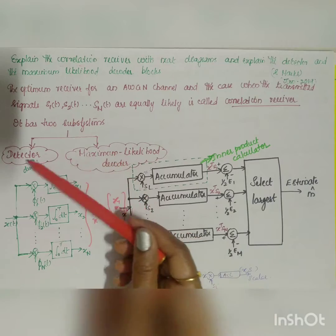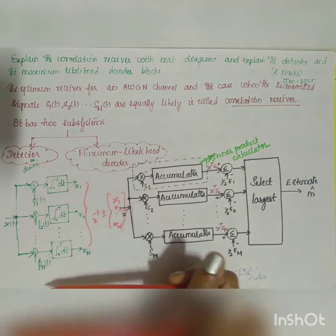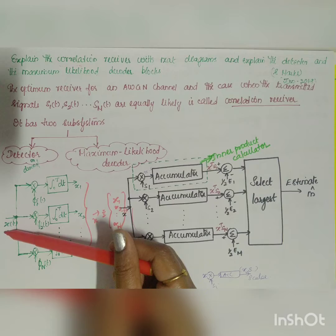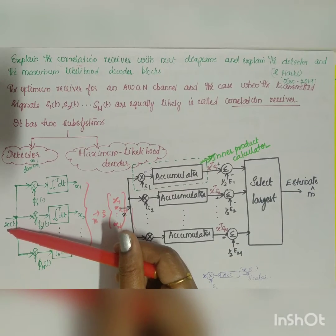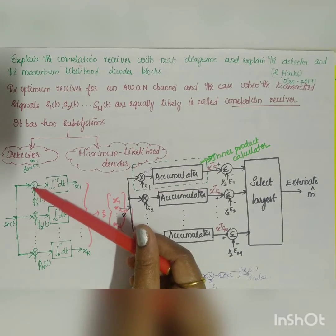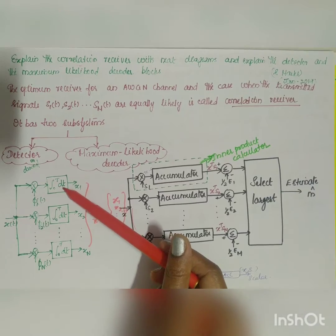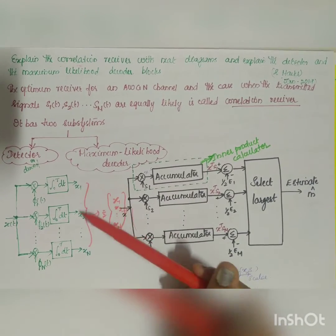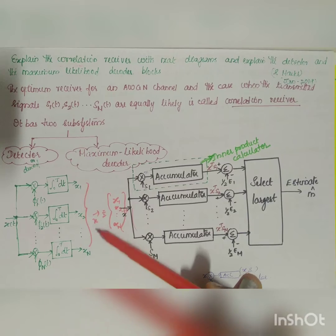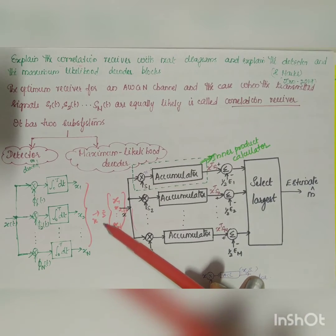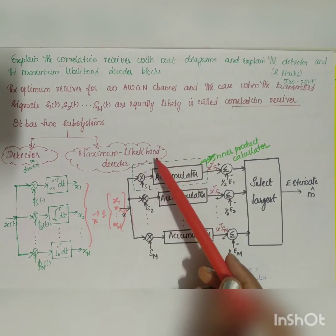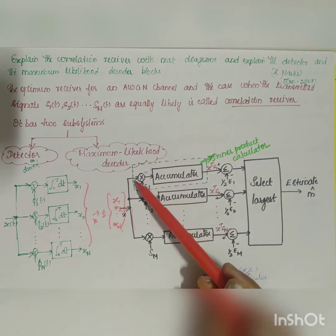In the diagram of the detector, the input is the received signal x(t), which is given to a product multiplier and an integrator, giving the output as the observation vector x1, x2, up to xn. The observation vector x equals x1, x2, up to xm.